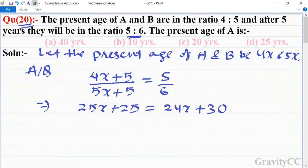This implies that 25x - 24x = 30 - 25, so x = 5.